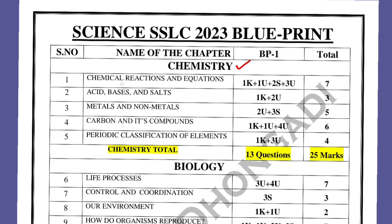The first chapter is Chemical Reactions and Equations. 'K' means knowledge-based questions, that is MCQs — one MCQ, one understanding question (one liner), and two skill-based questions (two marks). Skill-based means anything related to diagrams — you will be asked to draw a diagram — and three understanding-based questions.